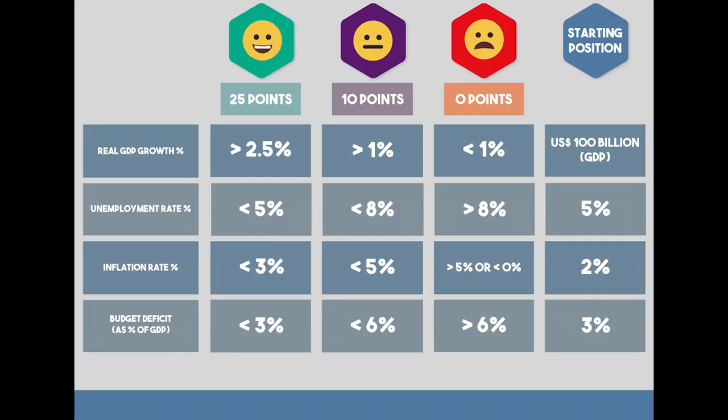GDP growth needs to be as high as possible. Unemployment needs to be low. Inflation should also be low, but not negative. Negative inflation, or deflation, is very destabilizing for an economy. Finally, the budget deficit, measured as a percentage of GDP, should also not be too high. Players can get up to 25 points for each of the four result areas, leading to a maximum total score of 100 points in each round. These points represent the approval rating that the population of the country gives for the economic policy decisions that have been made. The aim of the game is to end up with the highest average approval rating after seven years.